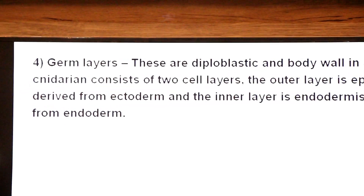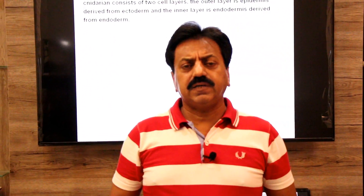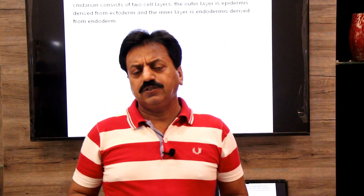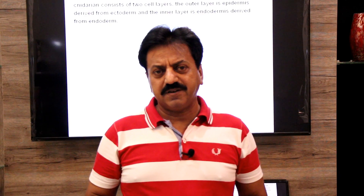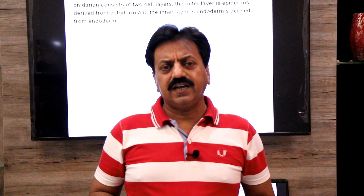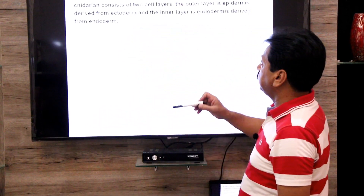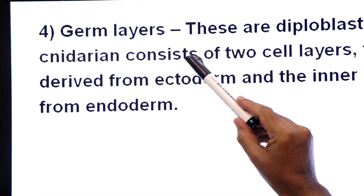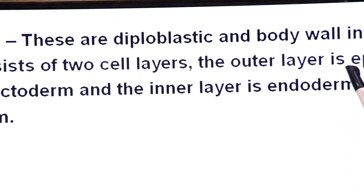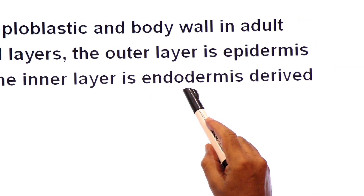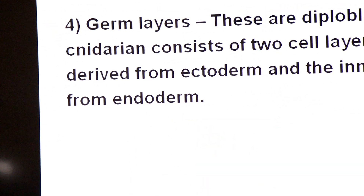Character number four is germ layers. The members of this phylum are called diploblastic due to the presence of two germinal layers — two germ layers in their embryo: outer ectoderm and inner endoderm. These layers form the organs — epidermis is derived from ectoderm, and endodermis is derived from endoderm. The body wall in adult cnidarians consists of two cell layers: the outer epidermis (from ectoderm) and the inner endodermis (from endoderm).